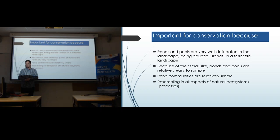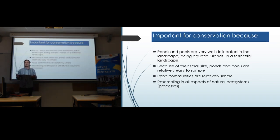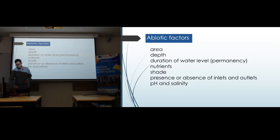Ponds are also complex ecosystems close to natural ecosystems, but relatively simple. This means that studying them can be useful to understand how larger natural systems work. These ecosystems are very complex, but not so complex that studying the relationships between species included in them becomes intractable.